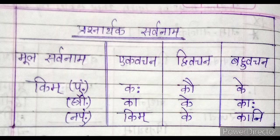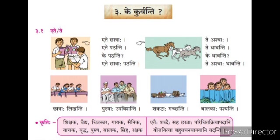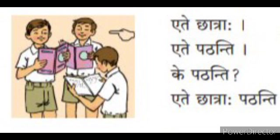First point — ete and te. Ete is the plural form of etat, meaning 'these all'. And te is the plural form of tat, meaning 'they all'. Ete chhatraha — these are students. Ete pathanti — they all are studying.